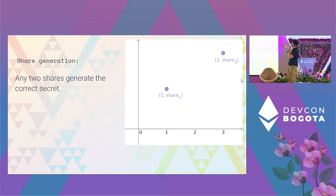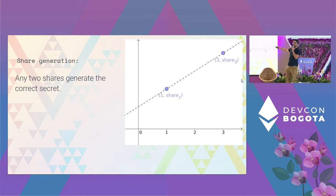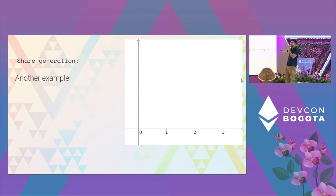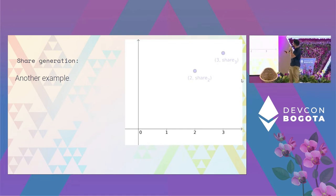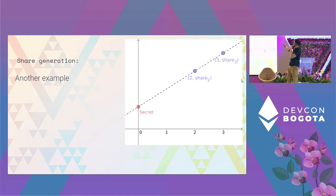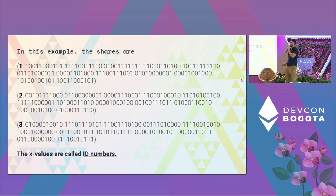For example, if you have shares one and three and share two got lost, you generate the straight line from those two points and the intersection with the y-axis gives you the secret you were trying to conceal. This works regardless of which two shares you have — shares two and three give you the exact same secret. So we get that nice redundancy property.